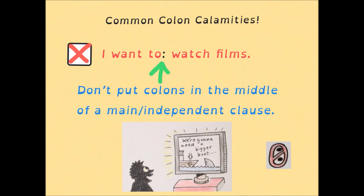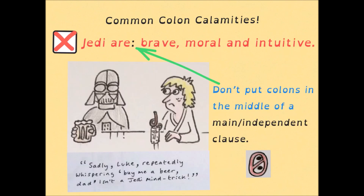Clock that example here: 'I want to watch films.' Well, do you know what — stroll on, colon! Your interjection is not needed here. You don't put a colon in the middle of a complete sentence — that doesn't work. Just let that sentence, that independent clause, flow like a mountain stream without any impediment. Here's another example to reinforce that message: 'Jedis are brave, moral, and intuitive.' You might think, 'Hey, that's a list — there's a colon!' No! Because it's a standalone sentence, the colon is redundant. Just say 'Jedis are brave, moral, and intuitive.' A colon is as much use here as a knitted saucepan — just leave it out.